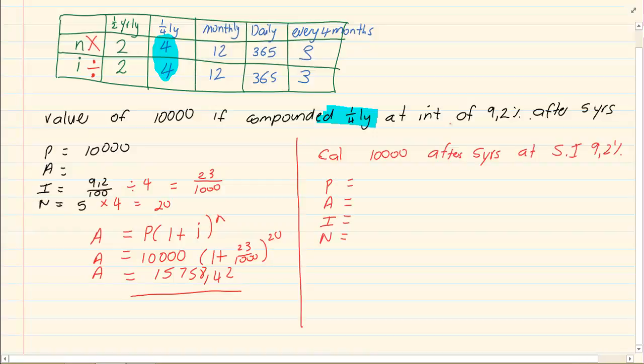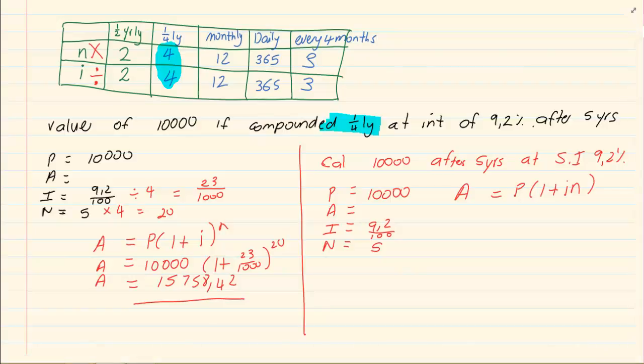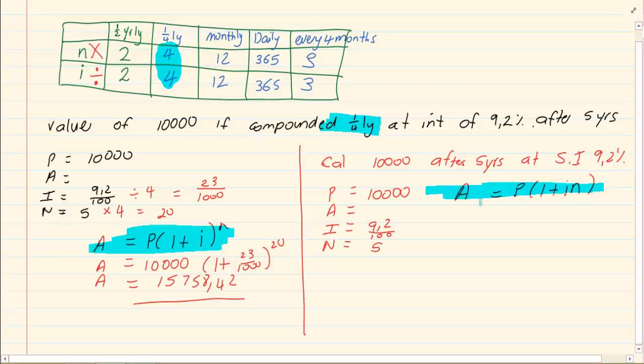If I gave you a similar question. Calculate R10,000 after 5 years of investment at a simple interest of 9.2%. Now when we are doing simple interest, there is no adjustment like this table. It is simply we are going to put in our P. Our I is 9.2% and our N is 5. The formula is A equals P(1 plus I times N). So it is not a power. Notice that the formulas for compound interest and for simple interest is different.